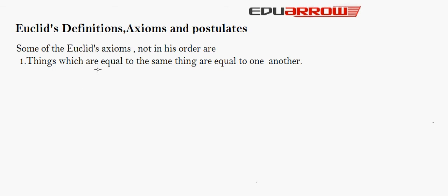Euclid assumes some properties not to be defined, and he categorizes these into axioms and postulates. He uses the term postulate for assumptions specific to geometry, while axioms are assumptions used throughout all of mathematics and not specifically linked to geometry. Some of Euclid's axioms, not in their original order, are as follows.